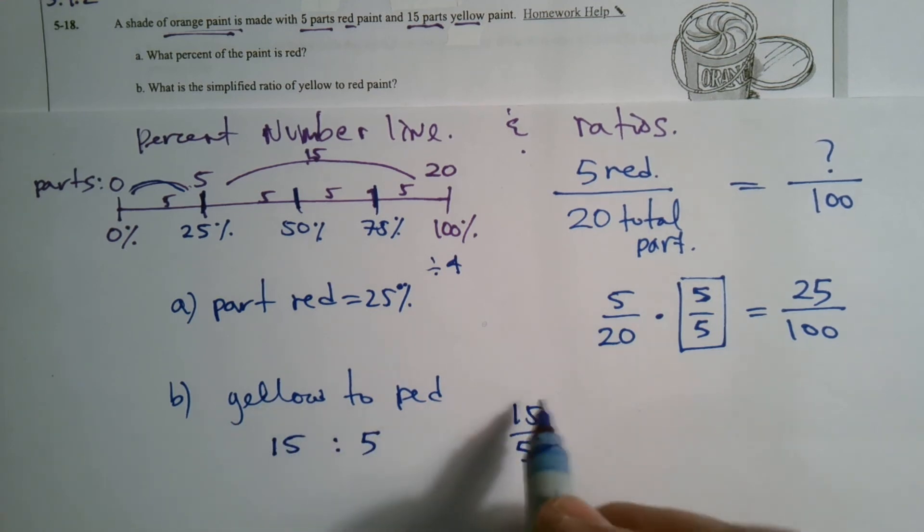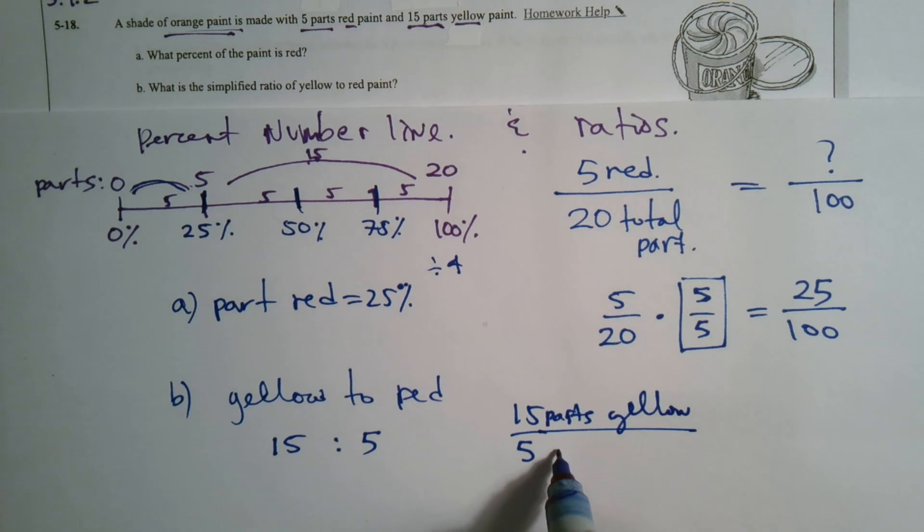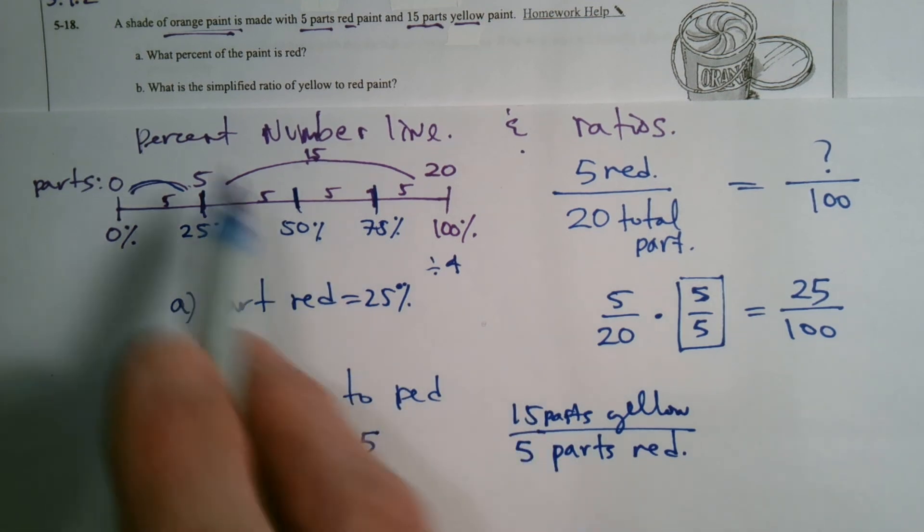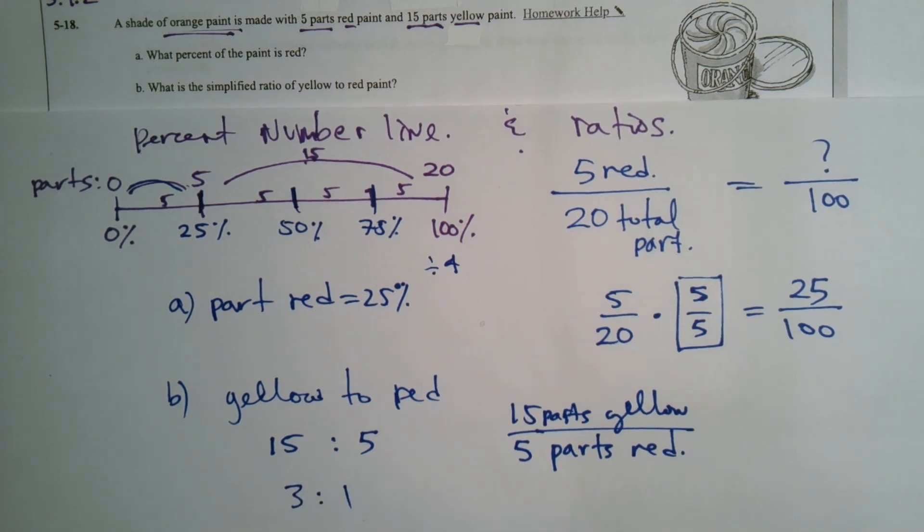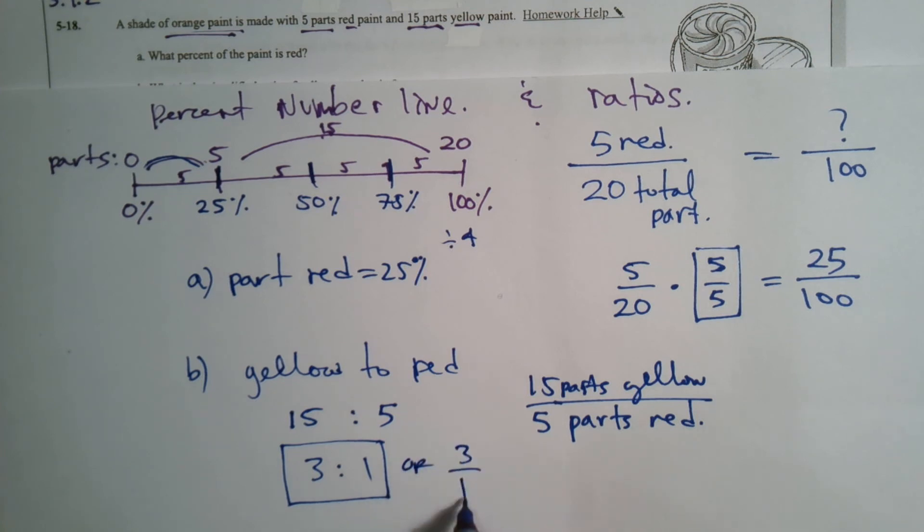So yellow to red. So that's 15 parts yellow to five parts red. If I'm writing my units here. And so it wants the simplified ratio so we can simplify that. That means divide top and bottom by the same number, which it would divide by five. My simplified ratio would be three to one. So three parts yellow to one part red. Or you can write it as a fraction, three over one. Okay. There you go.